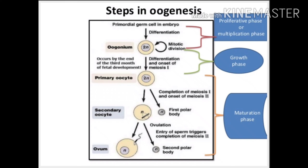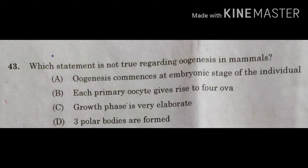From the diagrammatic representation of oogenesis, you can see that from the primary oocyte, a secondary oocyte and a polar body are formed — the primary oocyte does not give rise to 4 ova directly. Option A — oogenesis commences at embryonic stage of the individual — is a correct statement. Option B — each primary oocyte gives rise to 4 ova — is a wrong statement, because each primary oocyte gives rise to a secondary oocyte and a polar body, not directly 4 ova. Option C — growth phase is very elaborate — is correct. Option D — three polar bodies are formed — is also a true statement. So the correct answer is Option B.